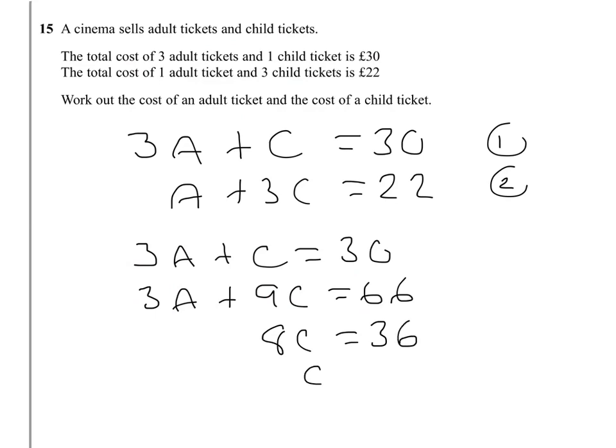So therefore C will equal 36 over 8. Now 8 goes into 36 four times with a remainder of 4, and that comes out as 4.5. So C is 4.5 or £4.50 as we're dealing with pounds and pennies.